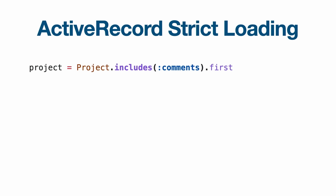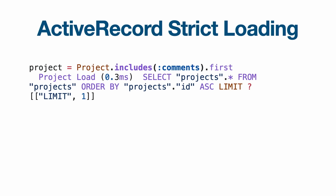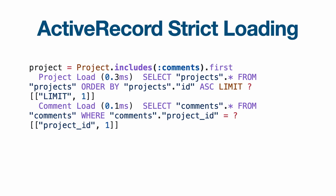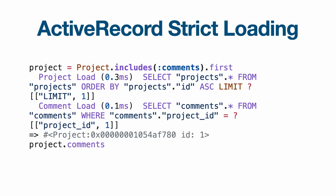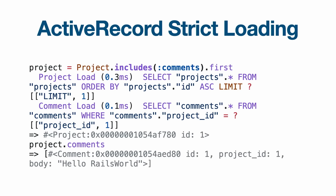To do this correctly when strict loading is enabled, say `Project.includes(:comments).first`. We just added the includes, which loads the project from the database and also loads the comments immediately. Then we can ask for project comments and it gives us that back without raising the error. So we can very specifically decide when or when we don't want to use that feature.